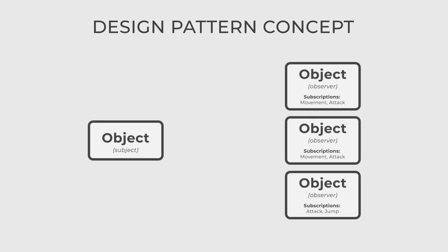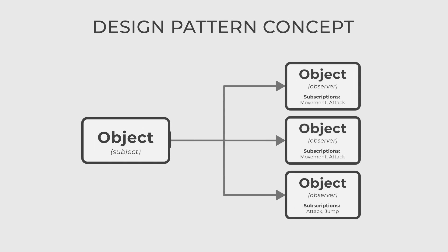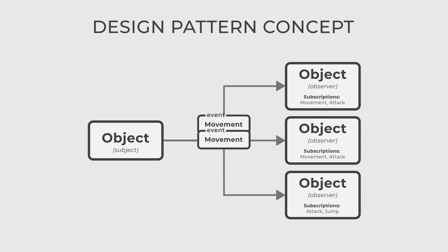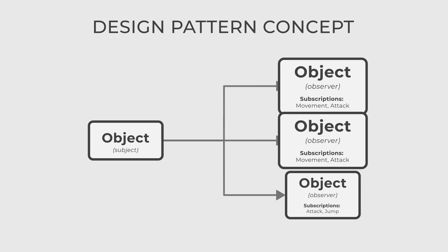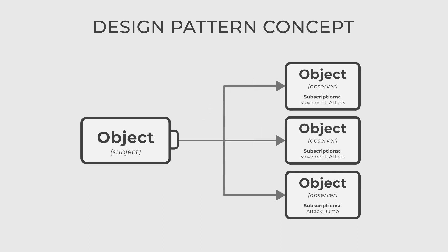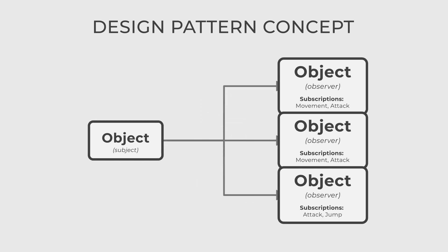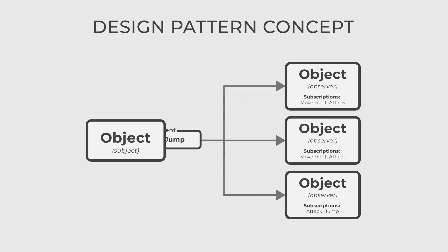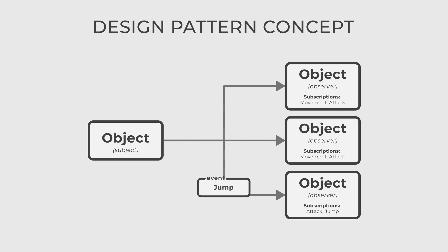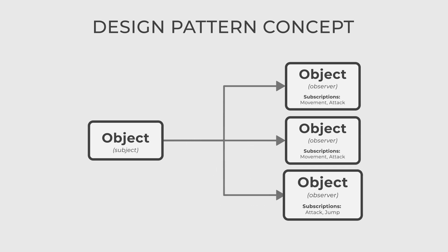The Observer is a behavioral design pattern that defines a one-to-many relationship between objects, where changes in one object are automatically communicated to and reflected in other objects. It enables a loosely coupled and efficient communication mechanism between components.